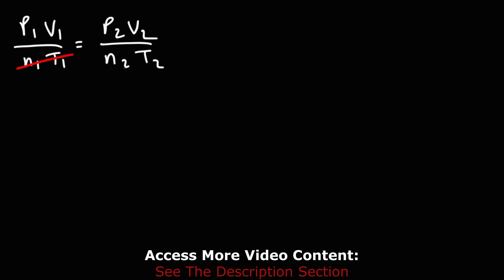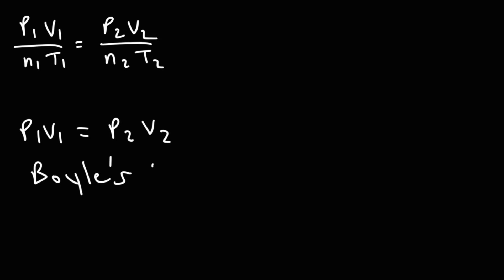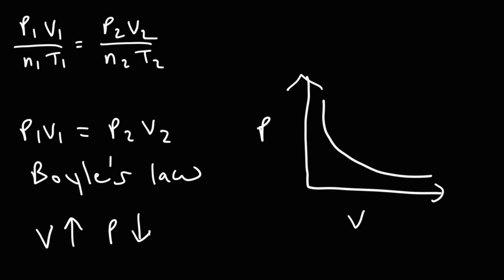The next equation is Boyle's law. If we hold the moles and temperature constant, we get P1V1 equals P2V2. Boyle's law describes the inverse relationship between volume and pressure — as you increase the volume, the pressure decreases.